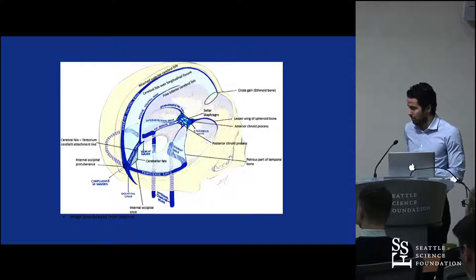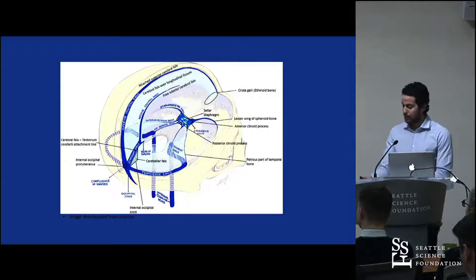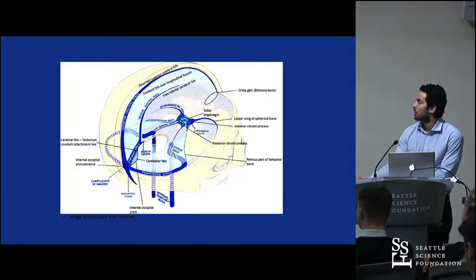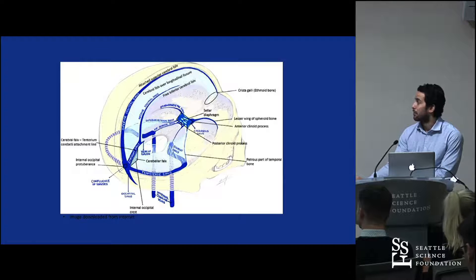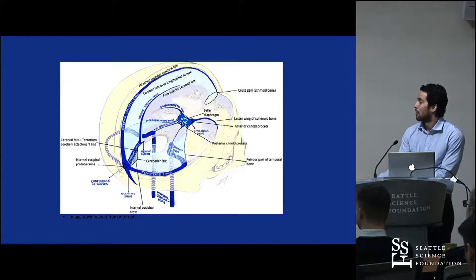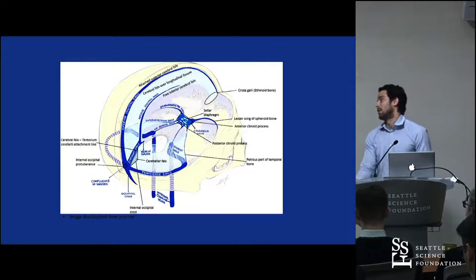Here is another image depicting the major sinuses. We can see the superior sagittal sinus arising from the falx and its insertion at the crista galli. The inferior sagittal sinus runs across the corpus callosum, meeting the vein of Galen to form the straight sinus, which drains into the confluence of the sinuses or sometimes directly into the right transverse sinus.